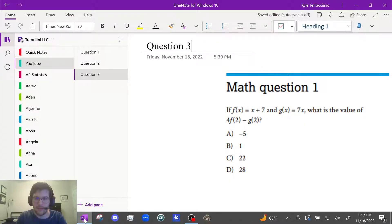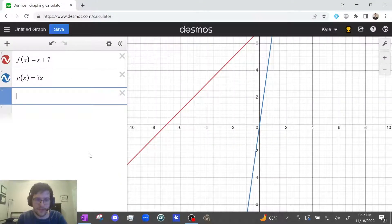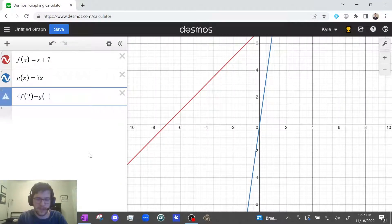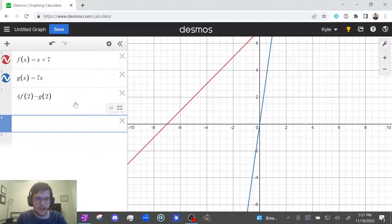And now we want to evaluate for f of 2 minus g of 2. So watch. Just type it exactly as written. 4f of 2 minus g of 2. And it tells me 4f of 2 minus g of 2 is 22.